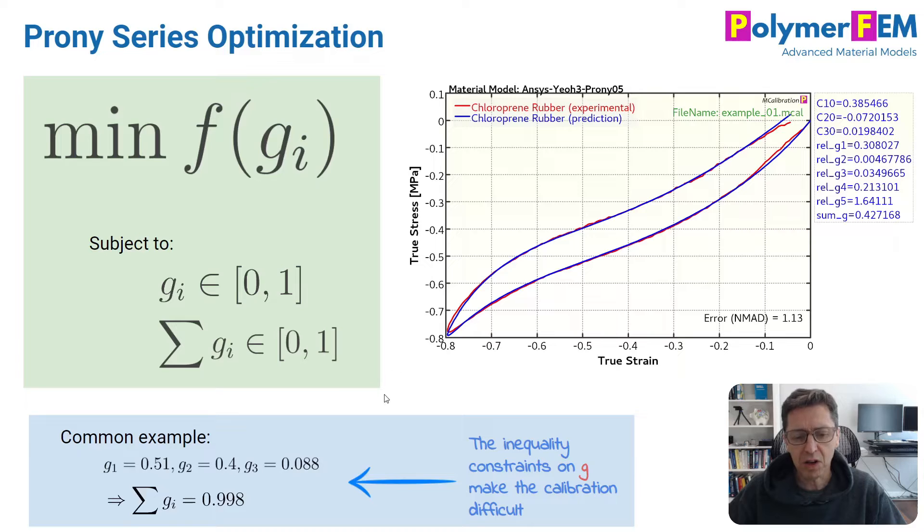So let's take a look at the example at the bottom here. If g1 is 0.51, g2 is 0.4, and g3 is 0.088. Now the sum of the g values become almost 1, 0.998. And I often see this in experimental data. You end up with the sum of the g values that is very close to 1.